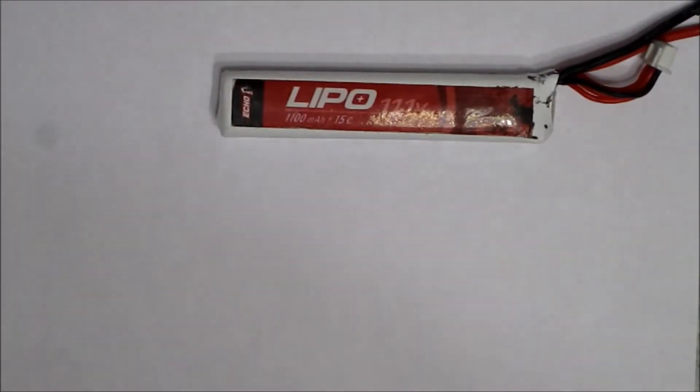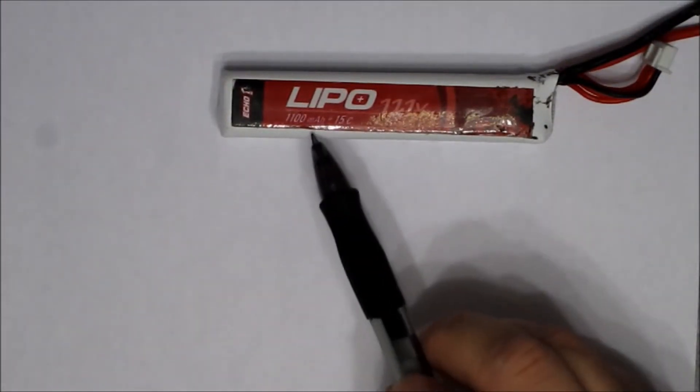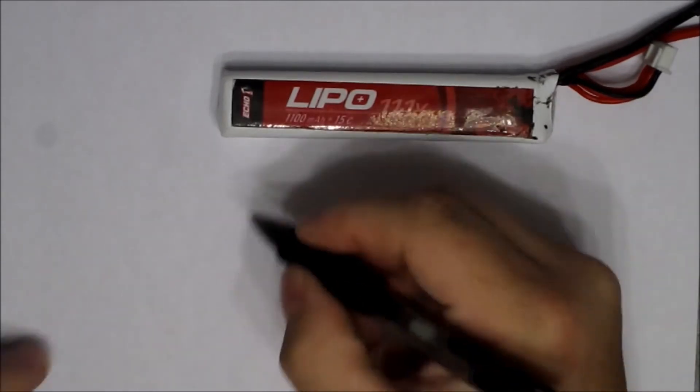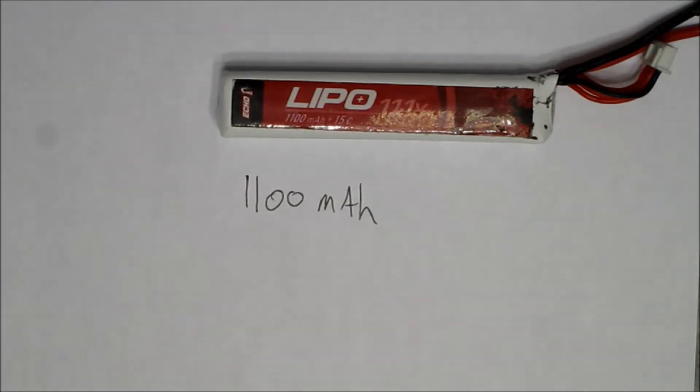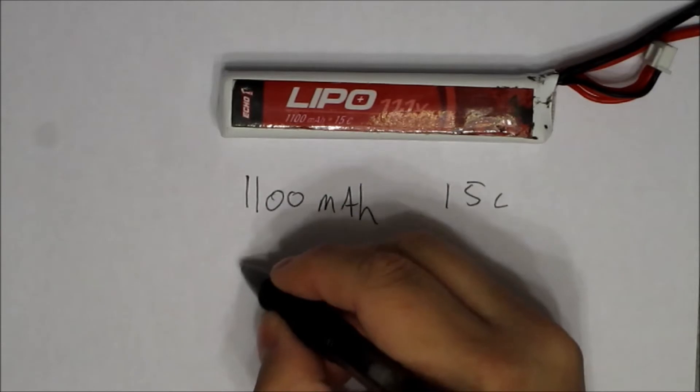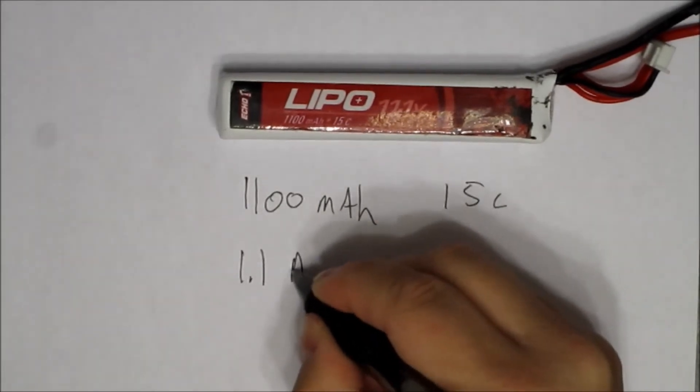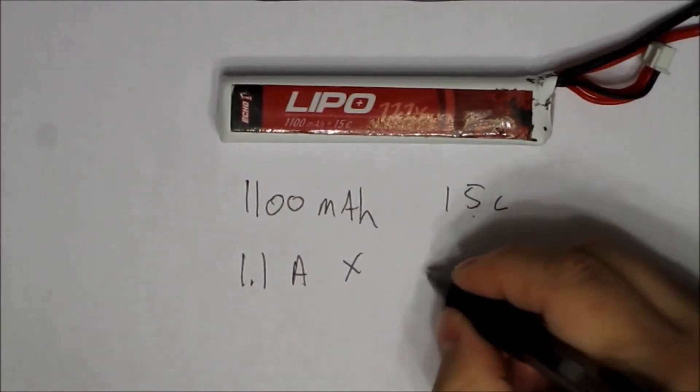So how do you find out the amperage of the LiPo? Well, let me grab a piece of paper here. Okay, you take the milliamps per hour—on this battery it's 1100—and the C rating—this one is 15C—and you multiply them together. First, you have to take the milliamp and convert it to regular amps. In this case, it'll be 1.1 amps times 15C.